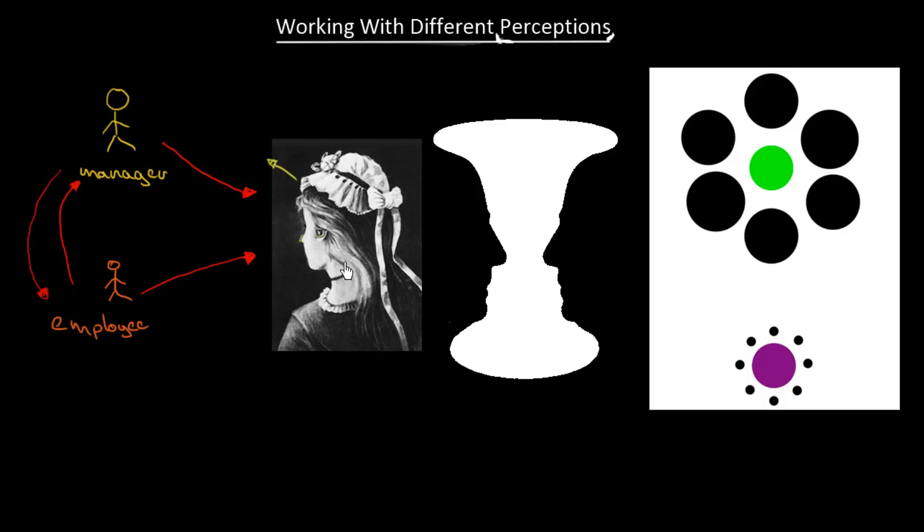So maybe our manager sees it as a young lady facing that direction. Well the employee can see there's an old lady, whereas here you have a nose of the lady, here you have the mouth and here is the back part of the head.